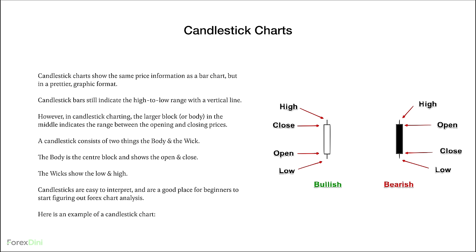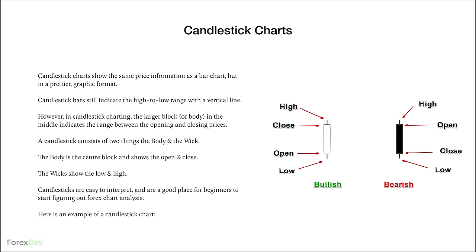I personally don't use a bar chart or line chart. What I actually use is a candlestick chart. Candlestick charts show the same price information as a bar chart but in a prettier graphic format. Candlestick bars still indicate the high to low range with a vertical line. However, in candlestick charting, the larger block or body in the middle indicates the range between the opening and closing prices. A candlestick consists of two things: the body and the wick. The body shows the open and close; the wicks show the low and high.